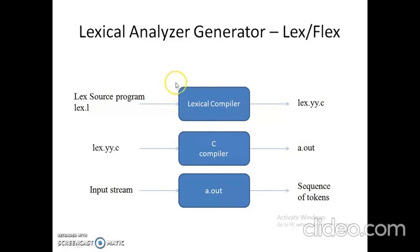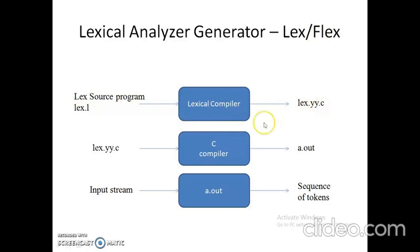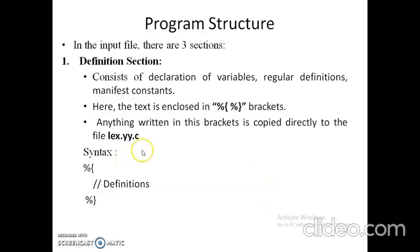Now let us see how to construct a lexical tool, which is nothing but a lexical compiler. The source program will have the extension .l, and when you use flex it will generate lex.yy.c, which you then compile using an ordinary C compiler. You will get an executable where you can give an input stream and check the sequence of tokens generated using a flex program.